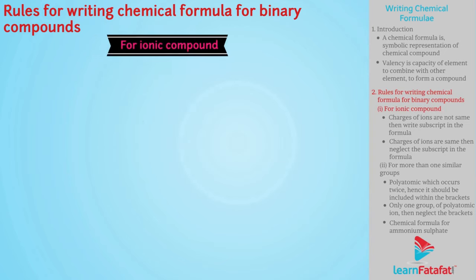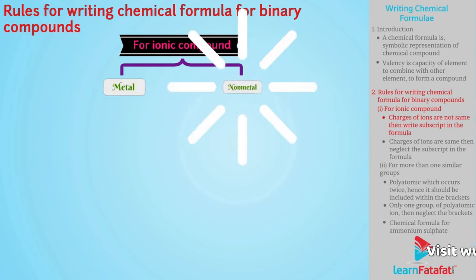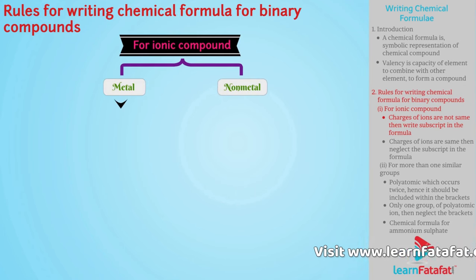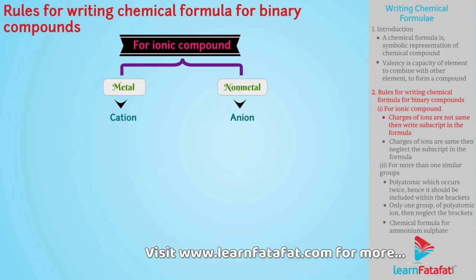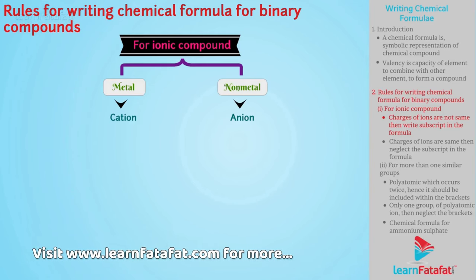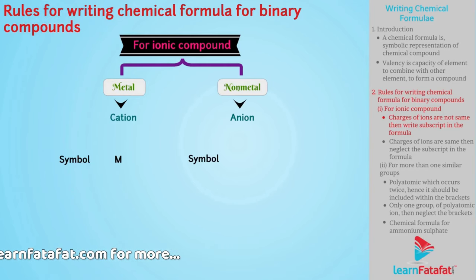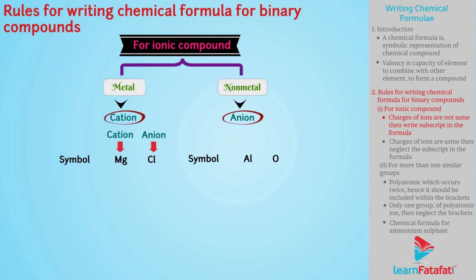For ionic compound, ionic compounds are made up of metal and non-metals, which are in the form of cation and anion respectively. To write formula for ionic compounds, symbol of cation is written previous to symbol of anion, and charges of ions should be written below them.